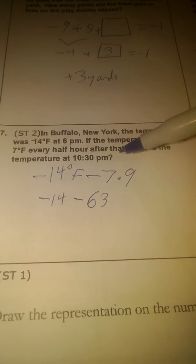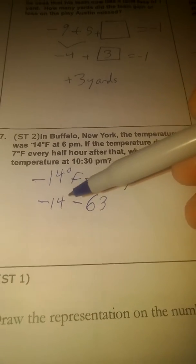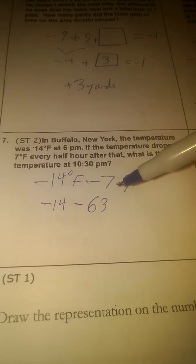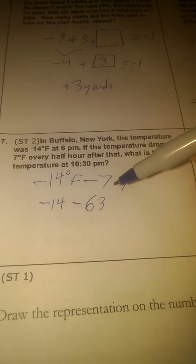What is the temperature at 10:30 p.m.? So we have a starting point of negative 14 degrees Fahrenheit, and we're going to drop 7 degrees Fahrenheit every half hour.